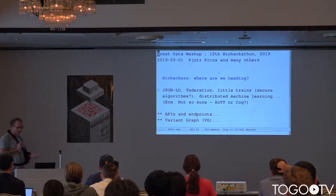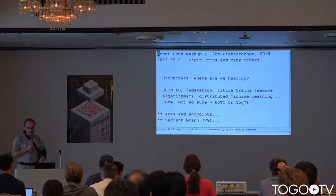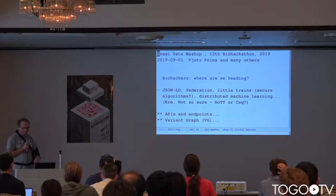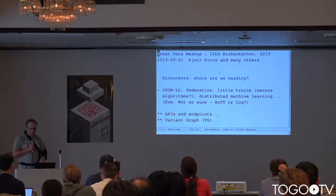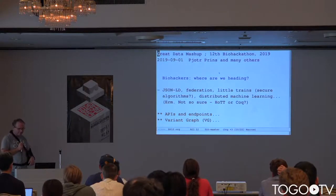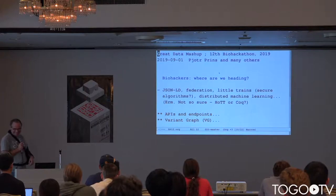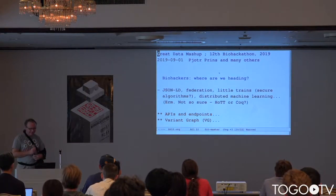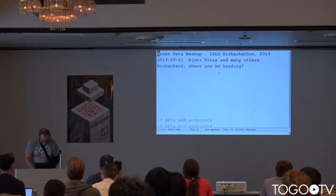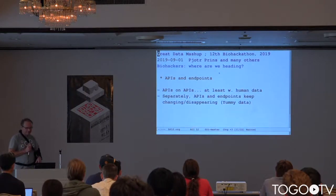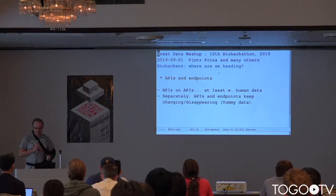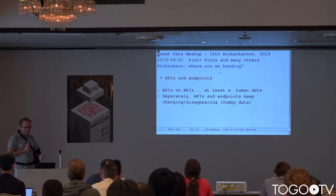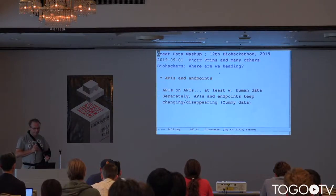But now we're heading — what I hear today — JSON-LD, Federation, little trains, big trains, secure algorithms, distributed machine learning. Hot or not? I don't know. What I also hear and see a lot for the Genomic Alliance for Health is APIs for human data — it seems to be a stack of APIs now.